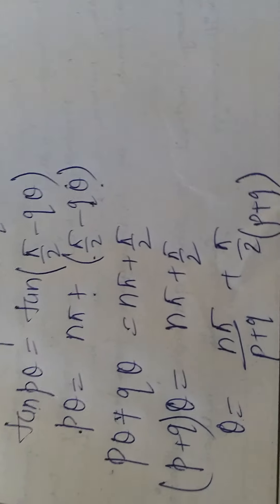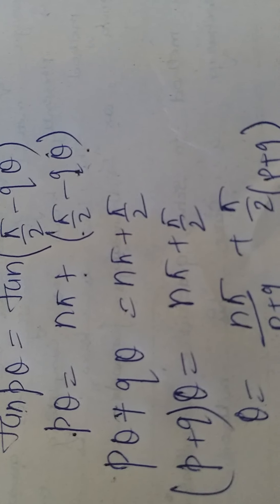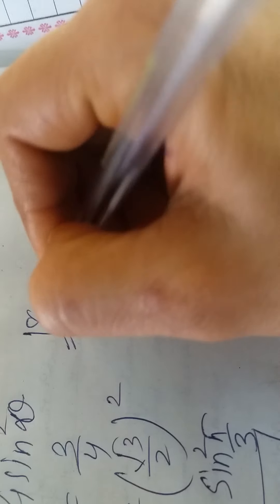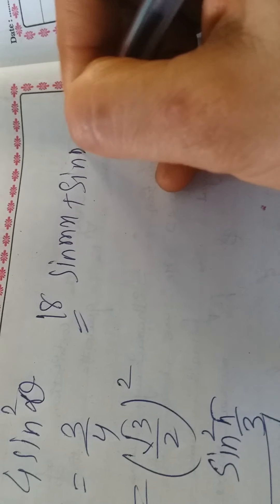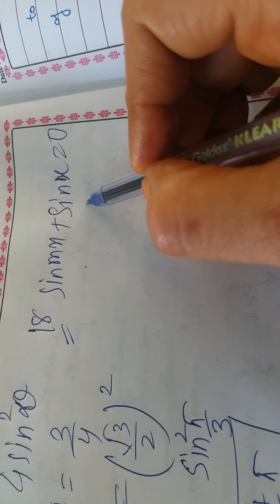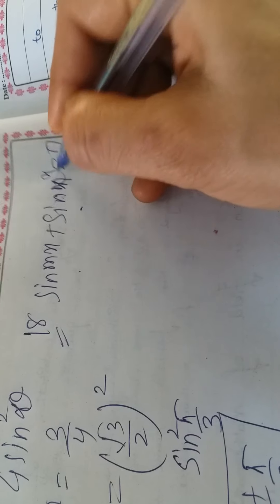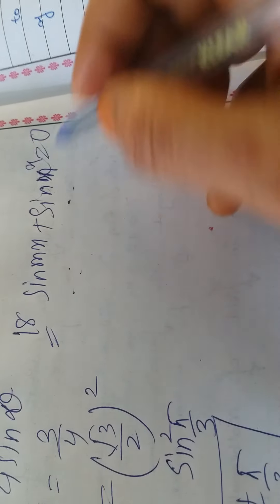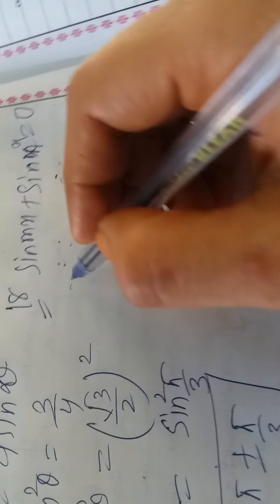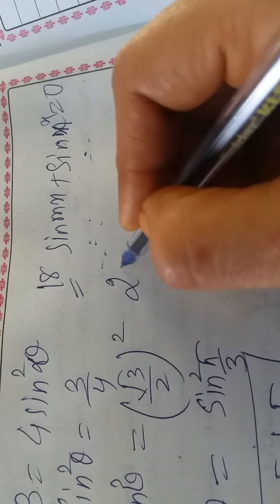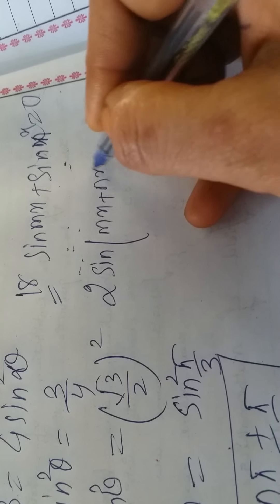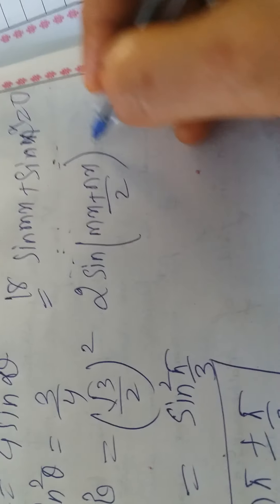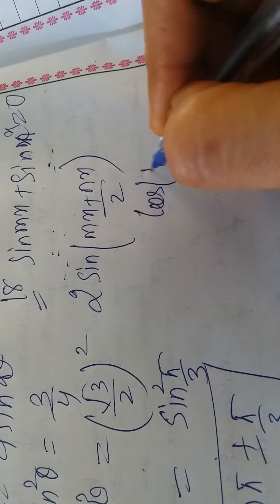Question 18: sin(mx) + sin(nx) = 0. This can be solved in two ways: using the sin C + sin D formula. Applying it gives 2·sin((m+n)x/2)·cos((m-n)x/2) = 0.